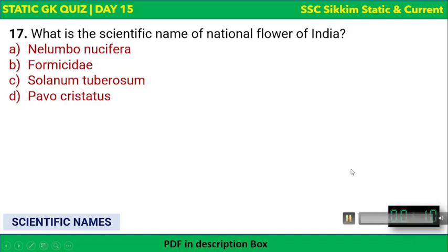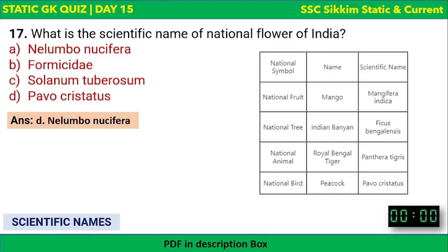What is the scientific name of the national flower of India? First, the national flower is the lotus, and its scientific name is Nelumbo nucifera. Other national symbols: national fruit mango is Mangifera indica, national tree Indian Banyan is Ficus benghalensis, and national animal Royal Bengal Tiger is Panthera tigris.